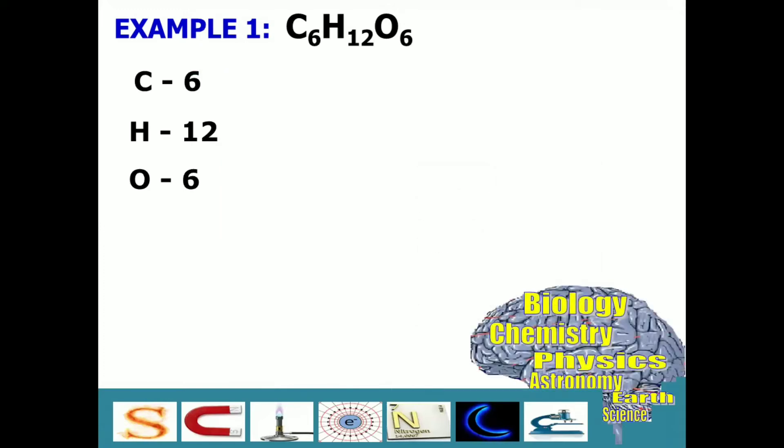Afterwards, we have to multiply the number of atoms based on the formula to its atomic mass. For carbon, we will multiply it with 12.01 grams per mole. Therefore, it is equal to 72.06 grams per mole.